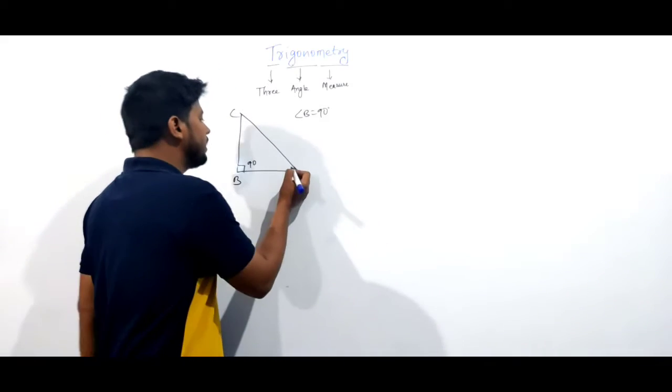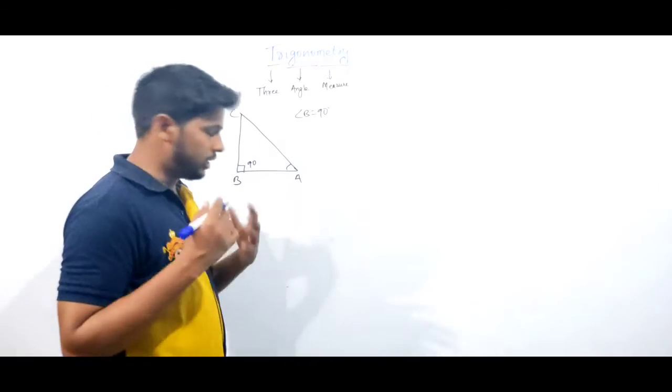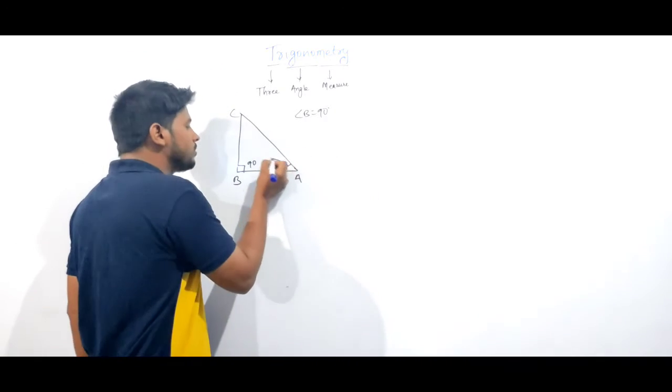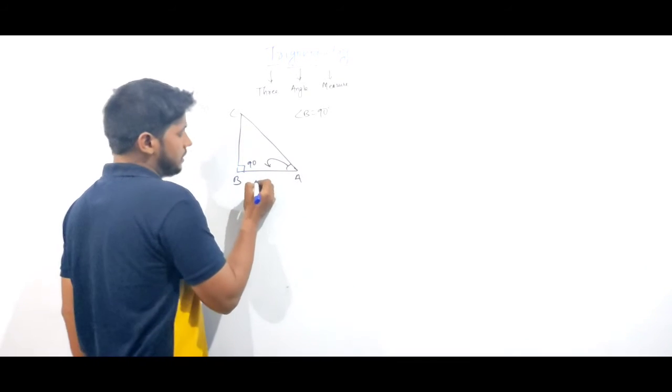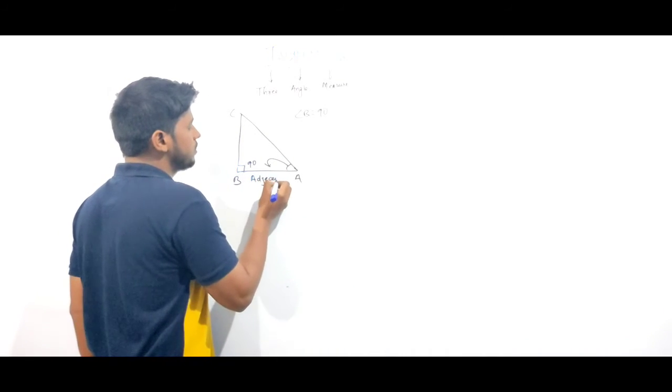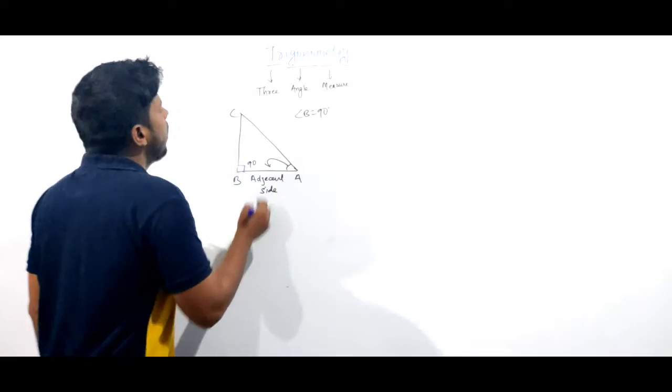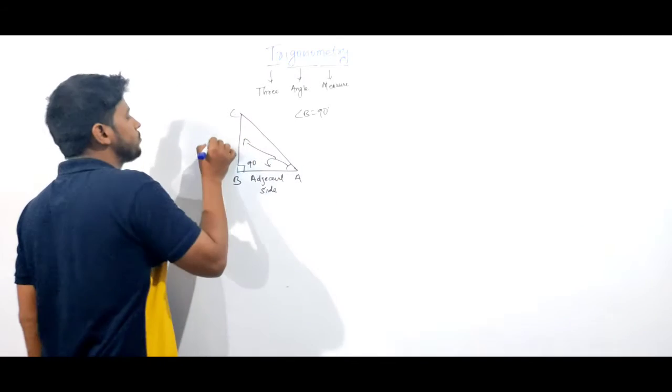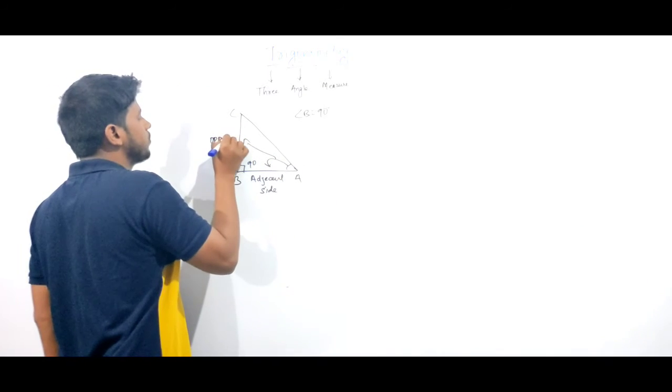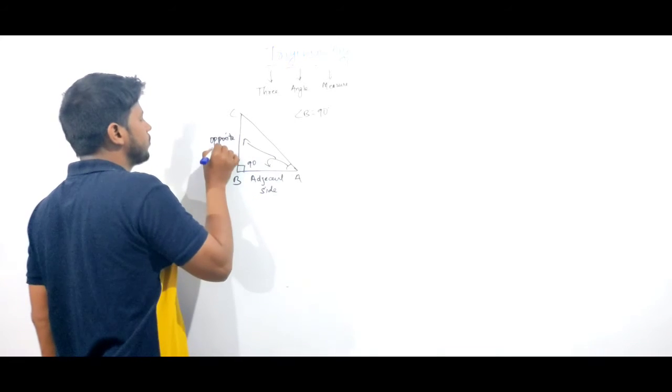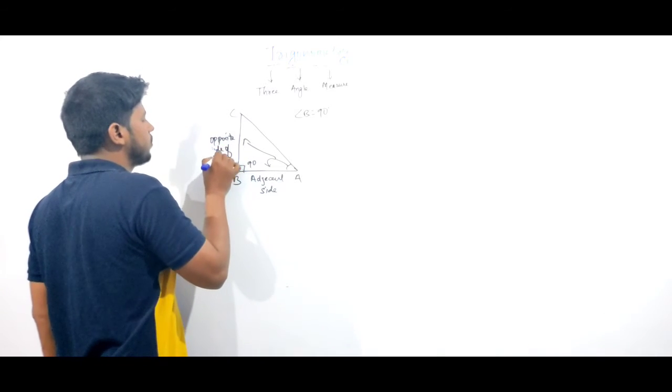Let us consider angle A as an acute angle. Then it gives us an adjacent side. It is the adjacent side of angle A and it is the opposite side of A.